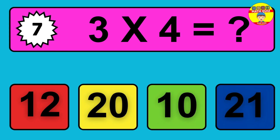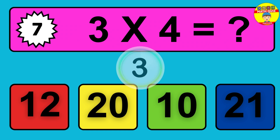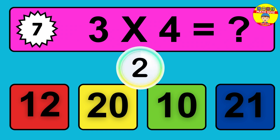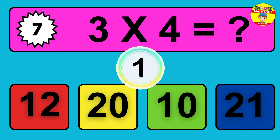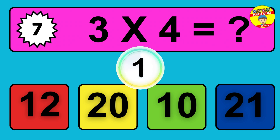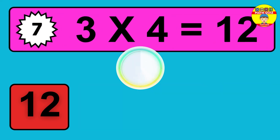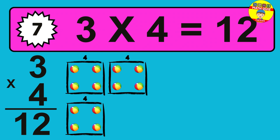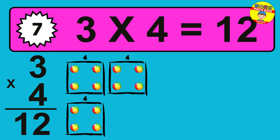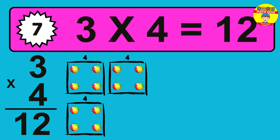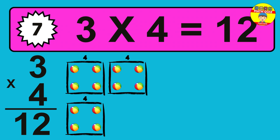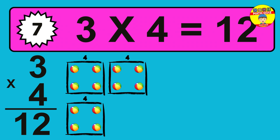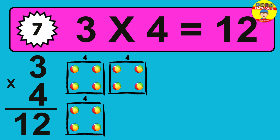Question 7. 3 times 4 equals what? So the answer is 3 times 4 is 12. To calculate, we have 3 groups with 4 balls each one. So how many balls do we have? 12 balls.